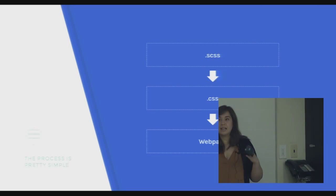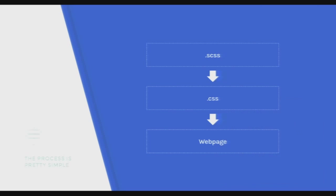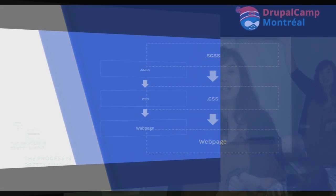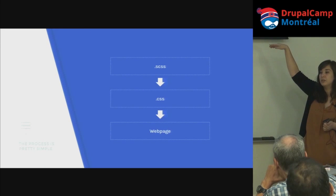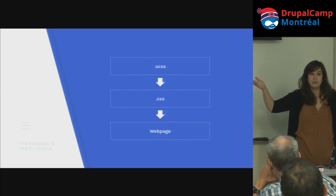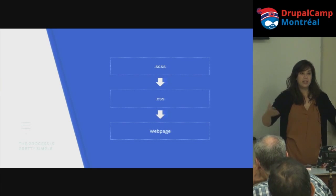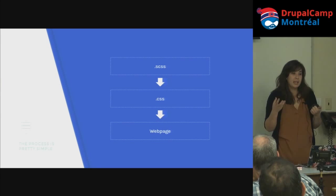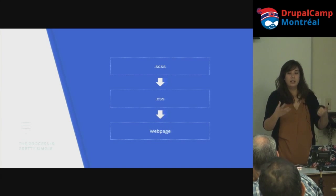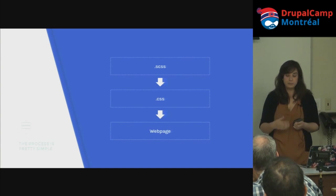So what is Sass and how does it work? We have a Sass file that gets compiled into a CSS file, which is then served up by the web page. The web browser's rendering engine reads HTML, CSS, and JavaScript — that's it.